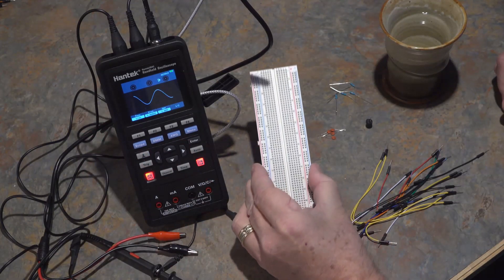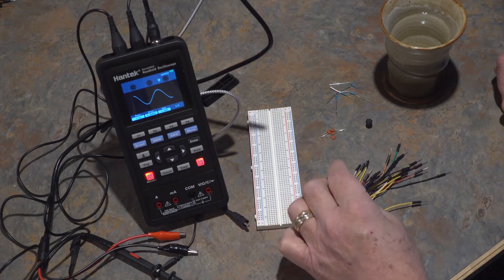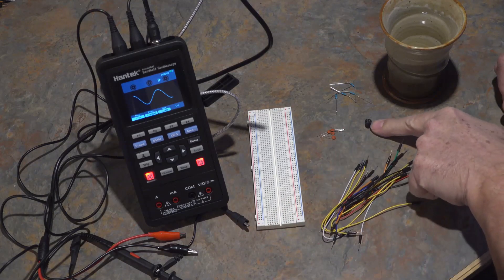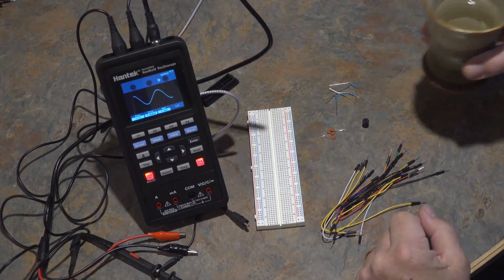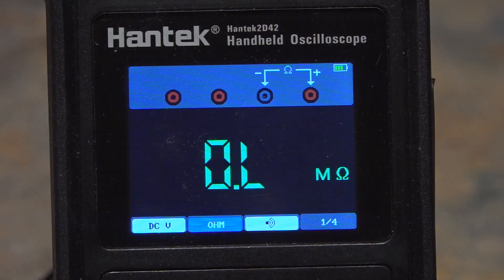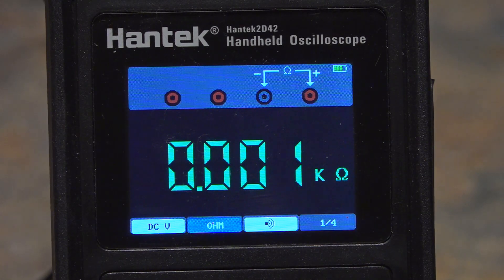We'll be using the breadboard, jumper wires to hook everything together, a capacitor, 100 microhenry choke, and a couple of resistors. First thing we're going to do is check our components. I've got three resistors, the first one is a 10 ohm and it measures out at 10.0 ohms, which is pretty good.